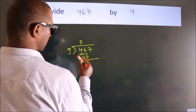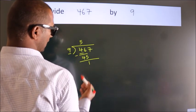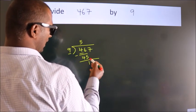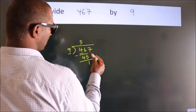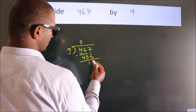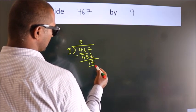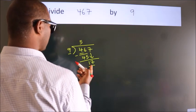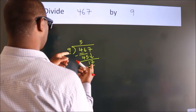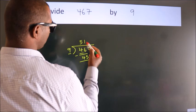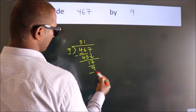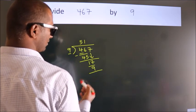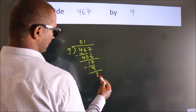Now we subtract and get 1. After this, bring down the beside number, so 7 comes down, giving us 17. A number close to 17 in the 9 table is 9 times 1, which is 9. Now we subtract and get 8.